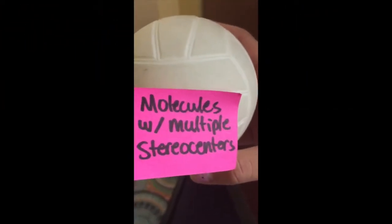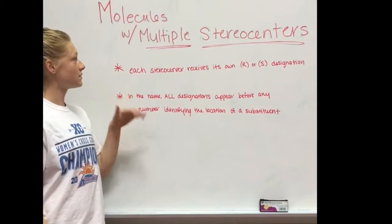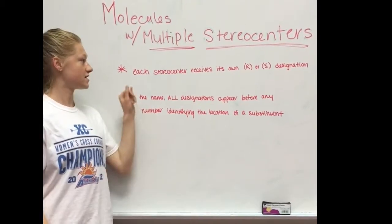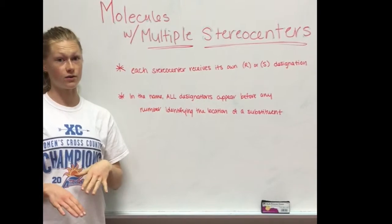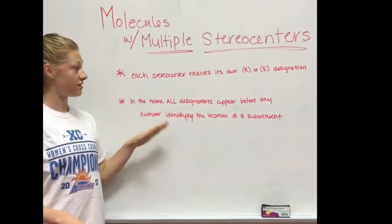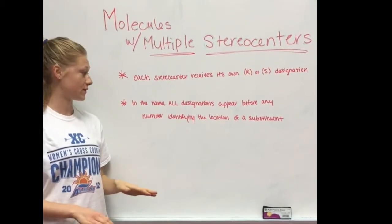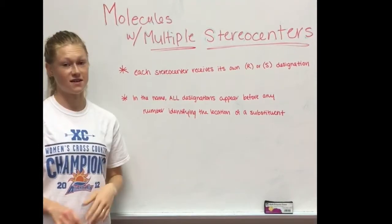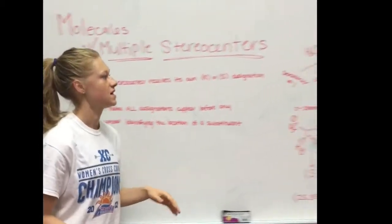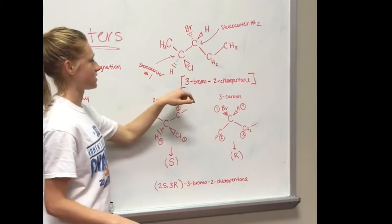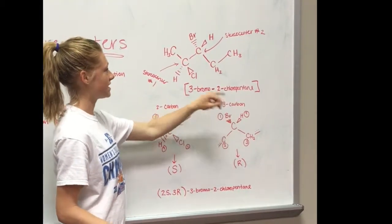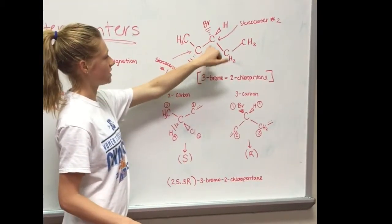Molecules with multiple stereocenters. When naming molecules with multiple stereocenters, each stereocenter receives its own R or S designation. In the name, all designations appear before any number identifying the allocation of any substituent. So an example of that is 3-bromo-2-chloropentane, which has a stereo center here and here.